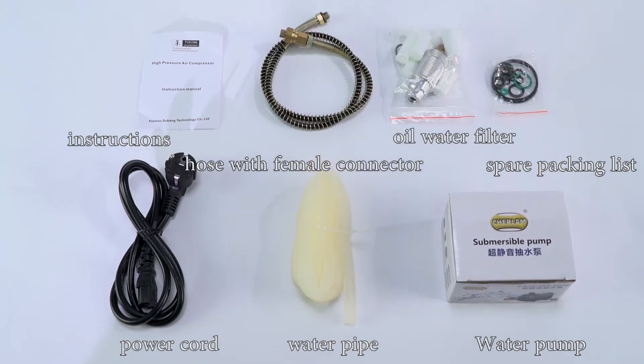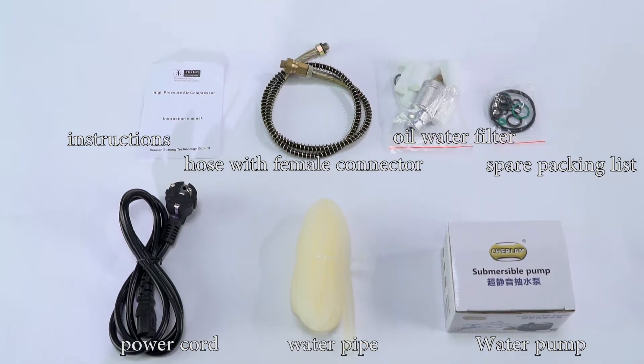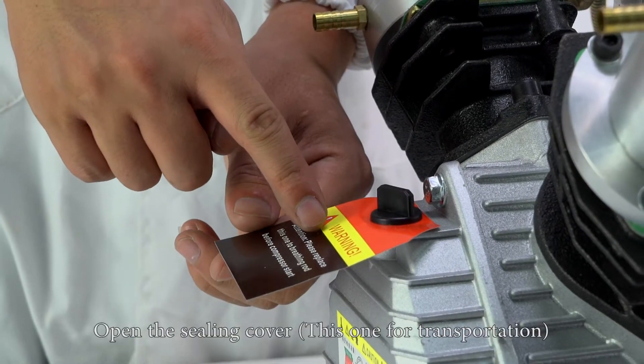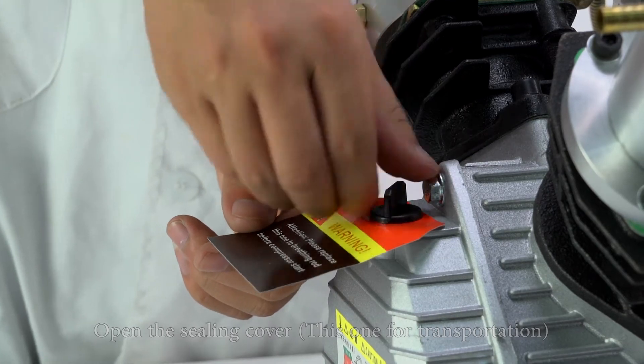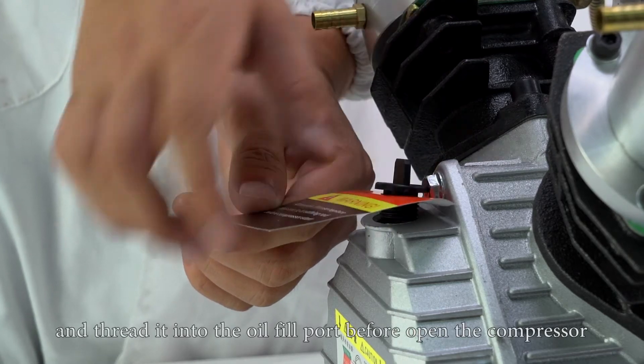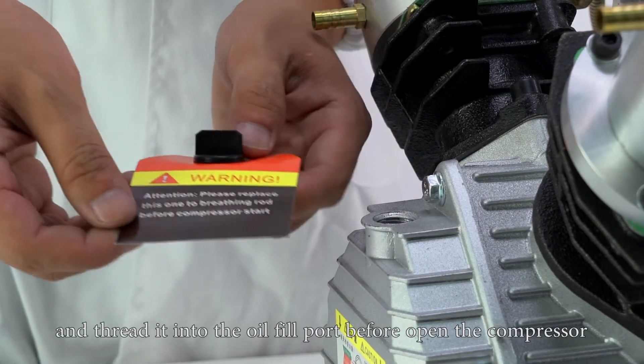When you receive the product, please check the accessories carefully. Let's begin the installation. Open the sealing covers (this one is for transportation). Locate the crankcase breather in the accessory pack and thread it into the oil fill port before opening the compressor.